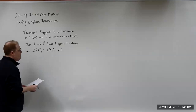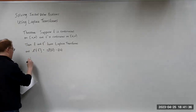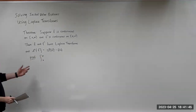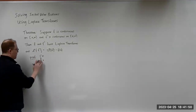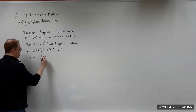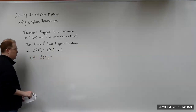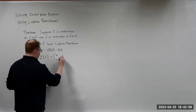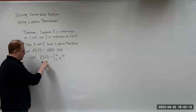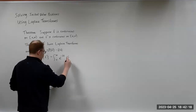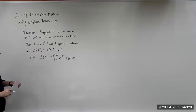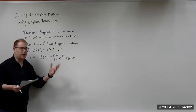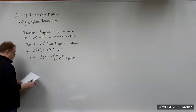So let's prove this result. We use the definition of the Laplace transform. We want to show that the Laplace of F prime equals S times Laplace of F minus F(0). To do that, we apply the definition: the improper integral from zero to infinity of e to the minus ST times F prime of T dt. Now we apply integration by parts — the product rule for integration.